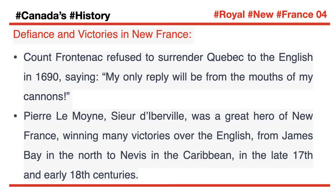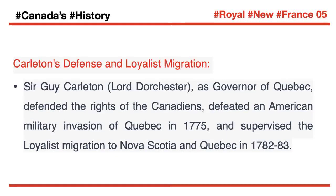In the late 17th and early 18th centuries, Sir Guy Carleton, Lord Dorchester, as governor of Quebec, defended the rights of the Canadians, defeated an American military invasion of Quebec in 1775, and supervised the Loyalist migration to Nova Scotia and Quebec in 1782–83.